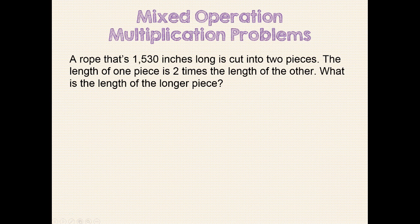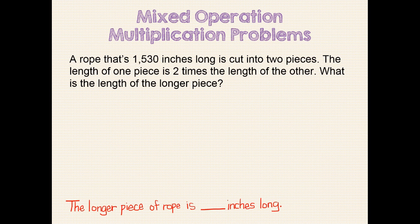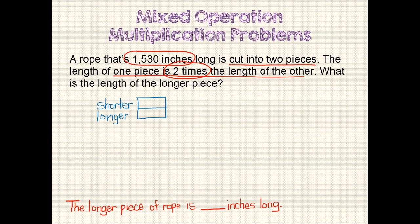Here's another problem. A rope that's 1,530 inches long is cut into two pieces. The length of one piece is two times the length of the other. What is the length of the longer piece? First, we will rewrite the question in sentence form: "The longer piece of rope is blank inches long." When rereading the problem, we identify the important information we need to solve the problem. We should start our model with one unit bar each for the shorter piece and the longer piece of rope. Since one piece is two times the length of the other, we can add a unit bar on for the longer piece. The base unit is one time as many, and one more is two times as many.